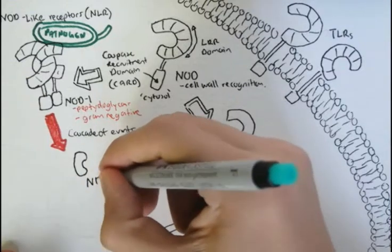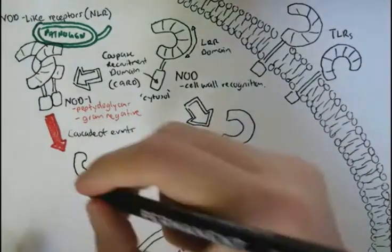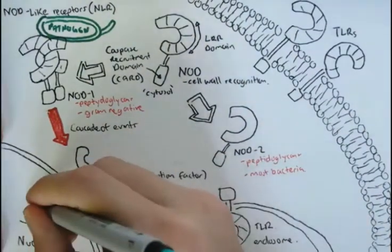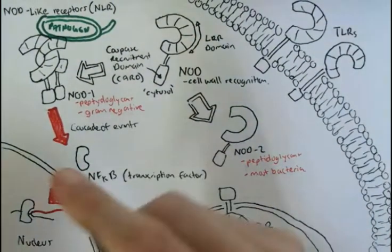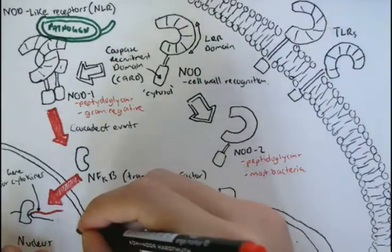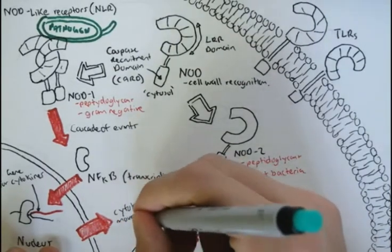This eventually leads to the final product, NF-κB. NF-κB is a transcription factor which enters the nucleus and transcribes genes for cytokines. The cytokines then leave the nucleus and cell, recruiting more immune cells and enhancing the immune response.